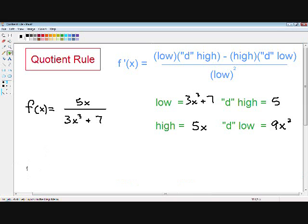So now we're ready to take the derivative. So our low is 3x cubed plus 7, d high is just 5, minus high, which is just 5x, d low, which is 9x squared.